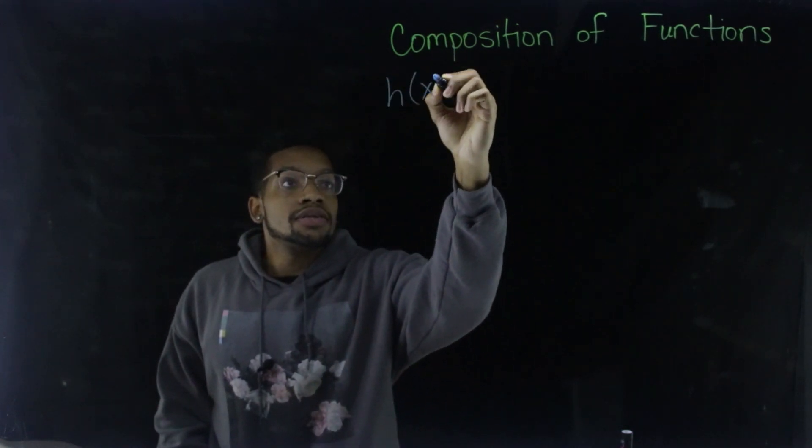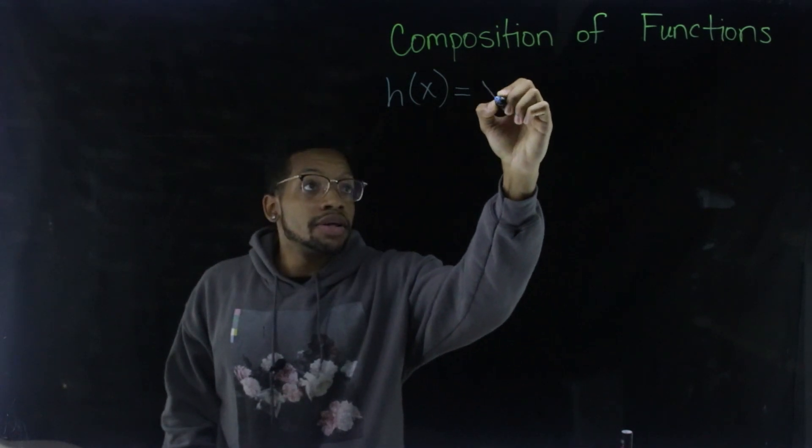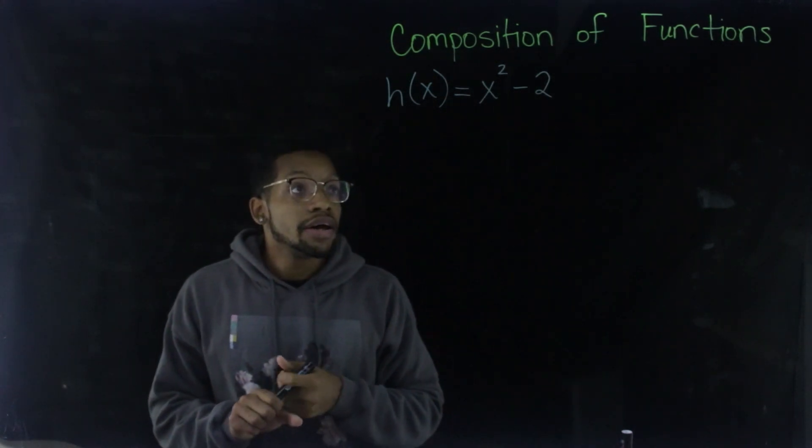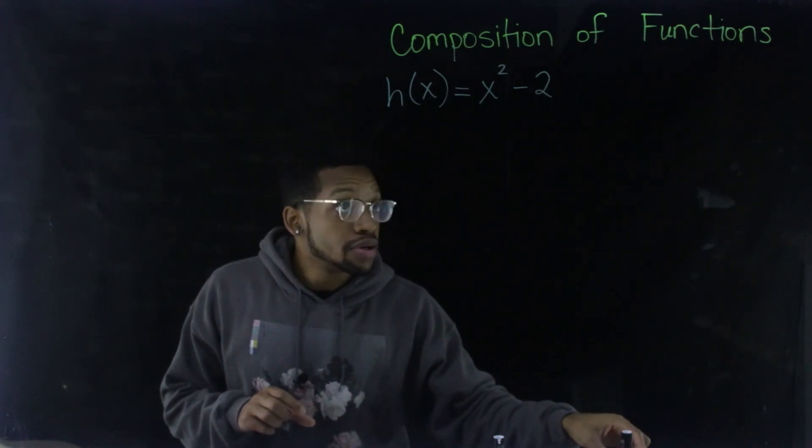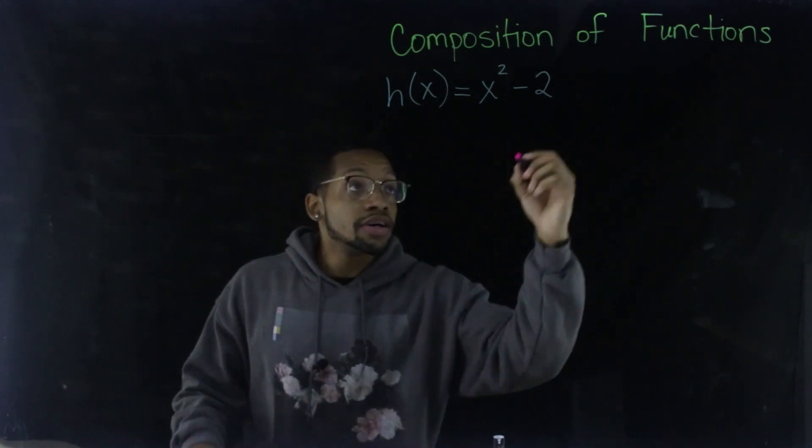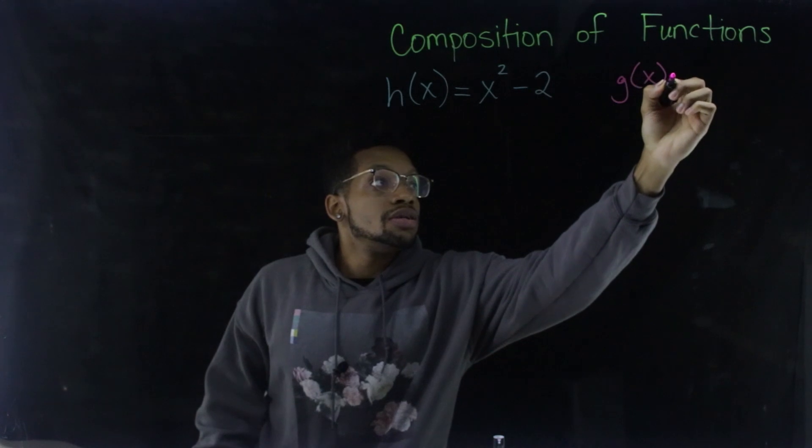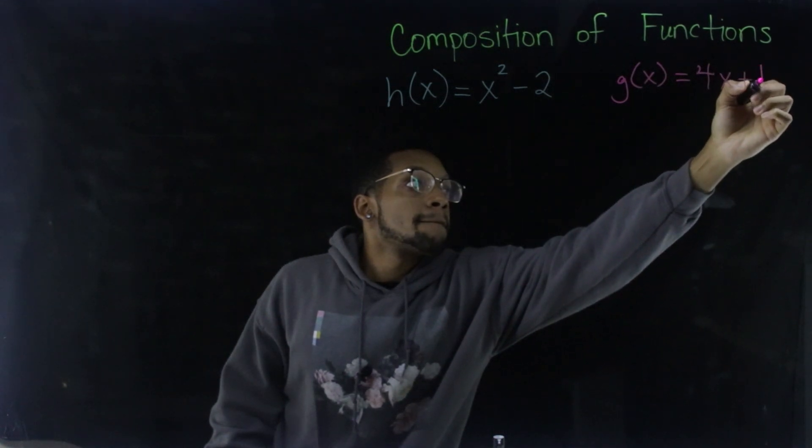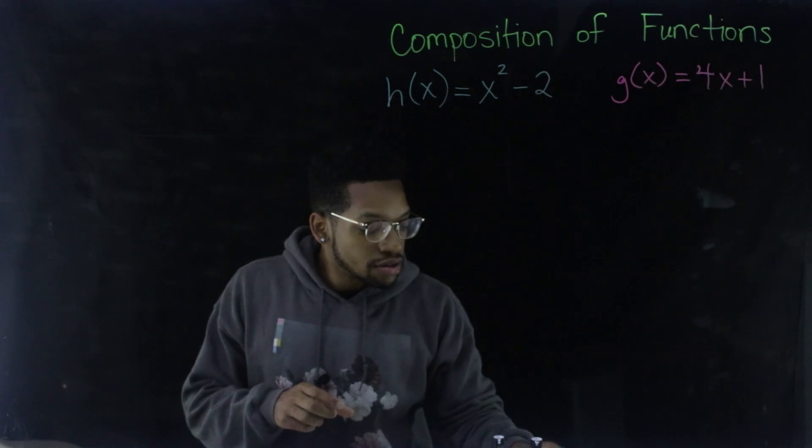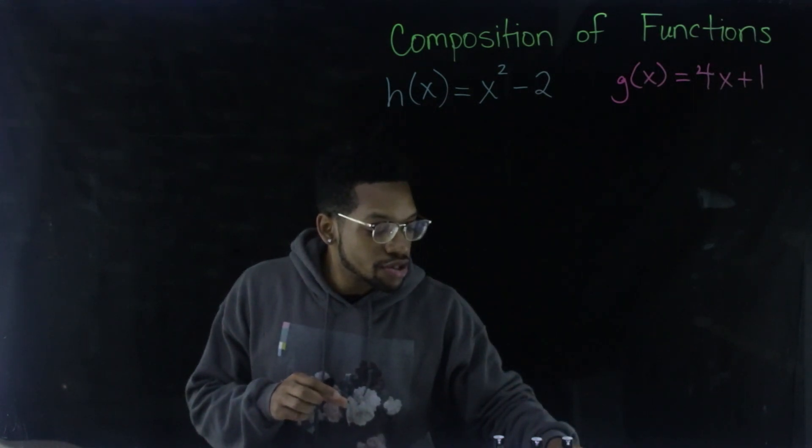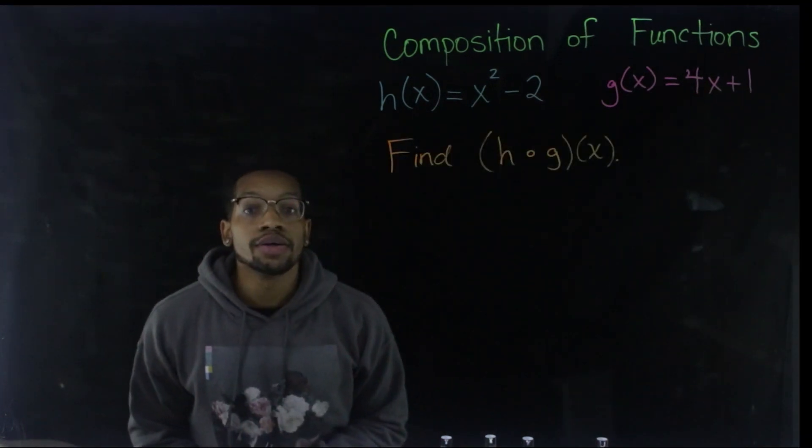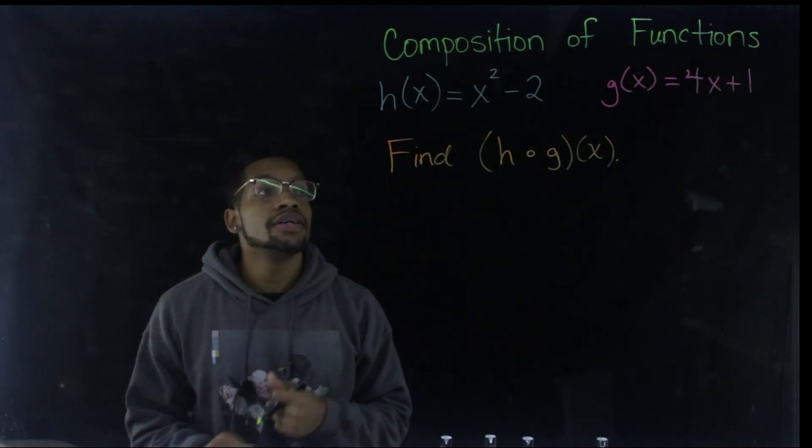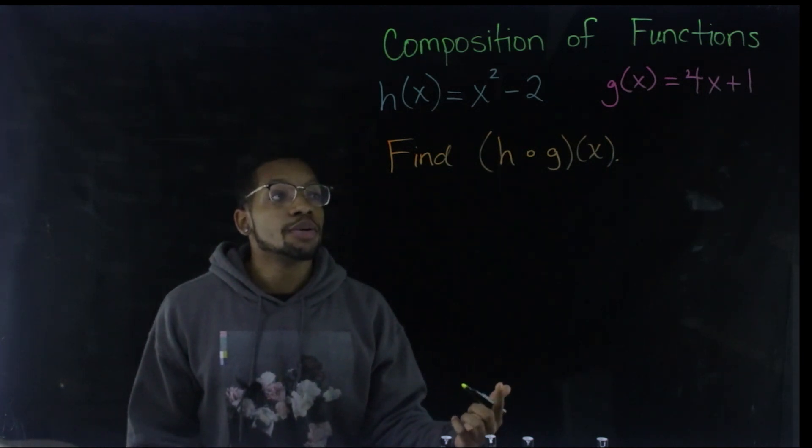Let's say we have H of X equals X squared minus two. Well, I'm so glad that went off at a time when I'm not filming for real for real. All right. So we have X squared minus two and then we'll do the other one in pink and that'll be G of X, which is equal to four X plus one. All right. So in this example, we have H of X, which is X squared minus two and then G of X, which is four X plus one. And then we're asked to find H of G of X or H composed with G of X.